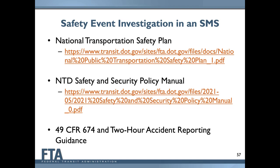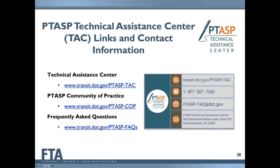Some of the useful resources we used to put together our PTASP and identify safety events included the National Transportation Safety Board resources, the NTD Safety Security Policy Manual—which outlines reporting thresholds for safety events—and 49 CFR 674, which even for non-rail agencies provides in its appendix useful examples of what constitutes NTD reporting, what's an occurrence, and examples of occurrences. We also used the FTA's accident recording guidance to understand our requirements under the PTASP regulation. Hopefully you can utilize some of those resources to enhance your program and plan.